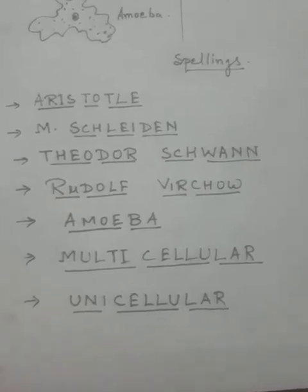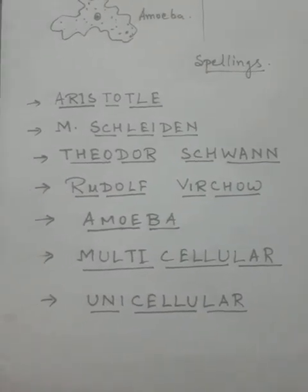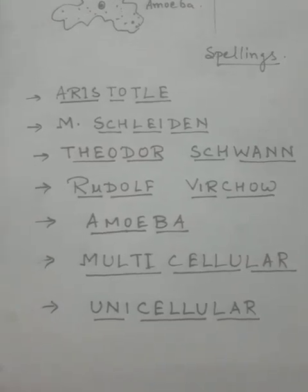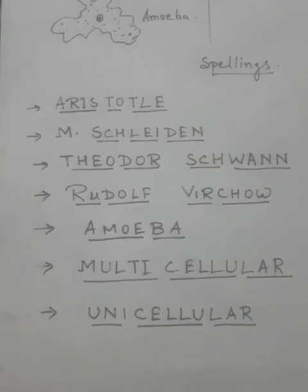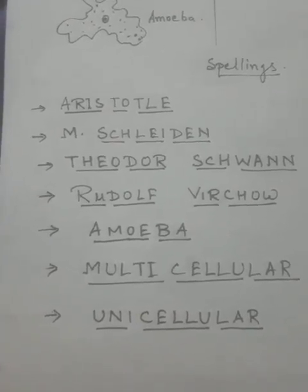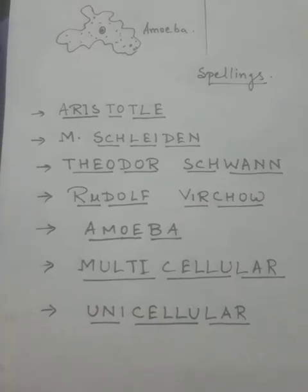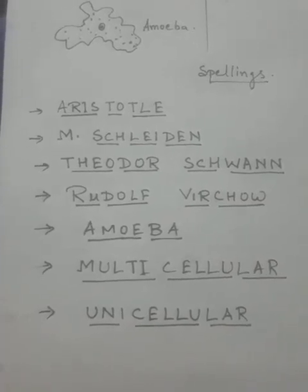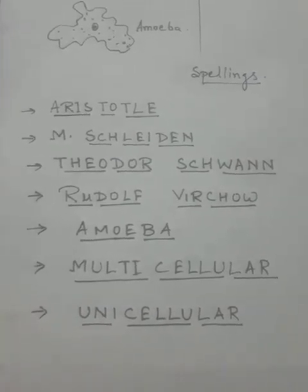Biology becomes very easy when we learn the correct spellings. The best way is to break words and then learn them. For example, the father of biology: A-R-I-S-T-O-T-L-E — Aristotle. Next is M. Schleiden — S-C-H-L-E-I-D-E-N. Next is Theodore Schwann — T-H-E-O-D-O-R-E S-C-H-W-A-N-N.